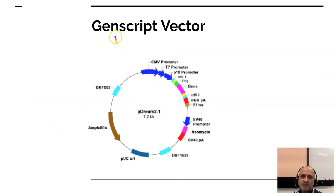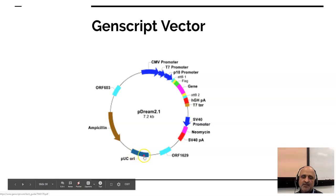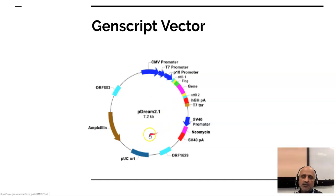The PDREAM 2.1 vector, a 7.2 KB vector available from GeneScript, is a very innovative vector. What is unique about it is that it contains three promoters: the CMV promoter specific to animal cells, the T7 promoter specific to bacterial cells, and the PTRAN promoter specific to insect cells. Using this vector as a shuttle, the copy number can be increased in bacteria as it has a specific origin of replication for E. coli. Once a sufficient copy number has been achieved, it can be transformed into animal or insect cells to achieve expression of the pertinent protein.